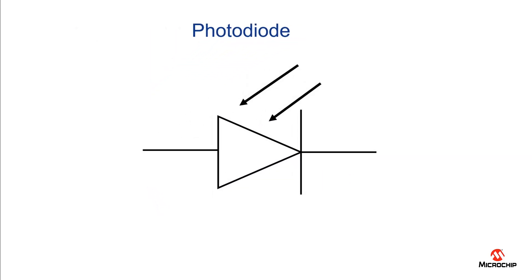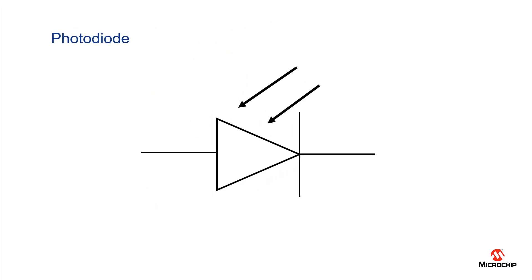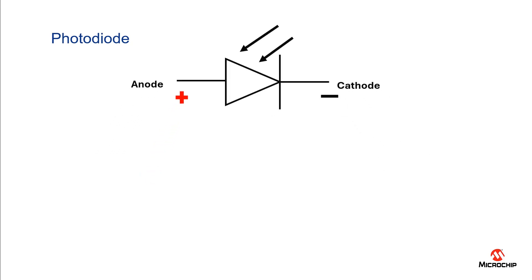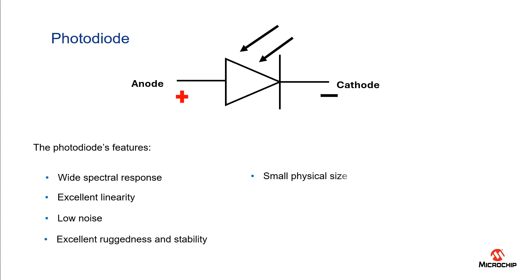So what is a photodiode? A photodiode is a semiconductor device with a p-n junction that converts photons or light into an electrical current. Some of the photodiode features consist of a wide spectral response, excellent linearity and stability, low noise, small physical size, and long lifetime.